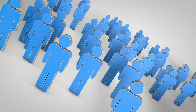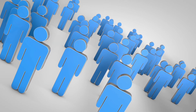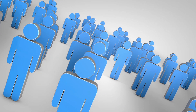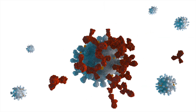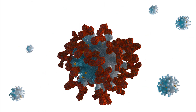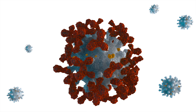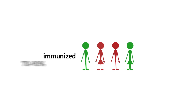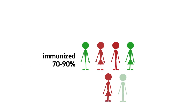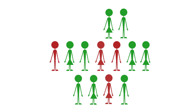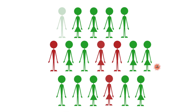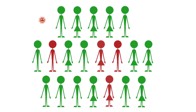As defined, herd immunity is — in a given population, let's say a city, county, or state — a high enough percentage of people are immunized or protected from infection by a pathogen, or bad bug. Saying it differently, even though everyone in the community is not protected, there's a high enough percentage of people, say 70, 80, or 90%, that are immunized, so the bad bug can't find enough unprotected hosts to spread wildly throughout the community.